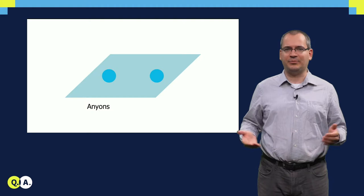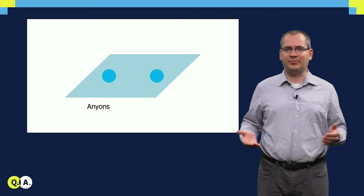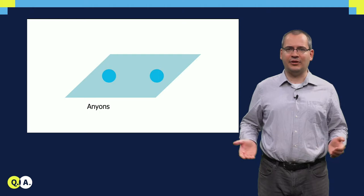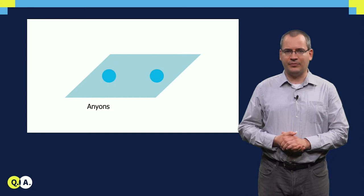In two dimensions, this picture changes dramatically, because particles can keep track of how many times they were exchanged around each other. Therefore, we lose the previous restriction of alpha, which only allowed for two types of elementary particles.